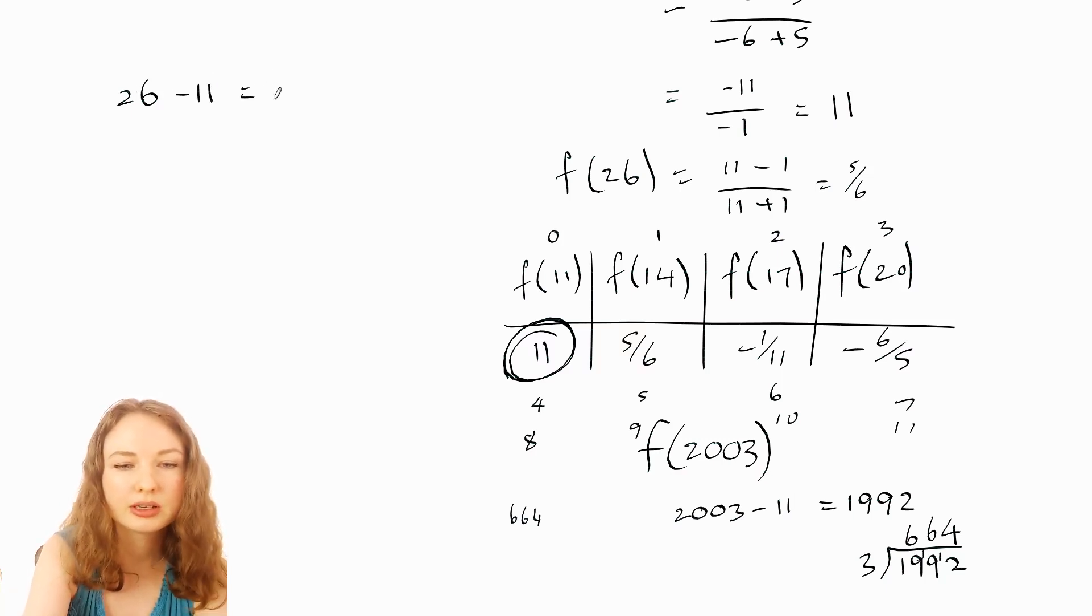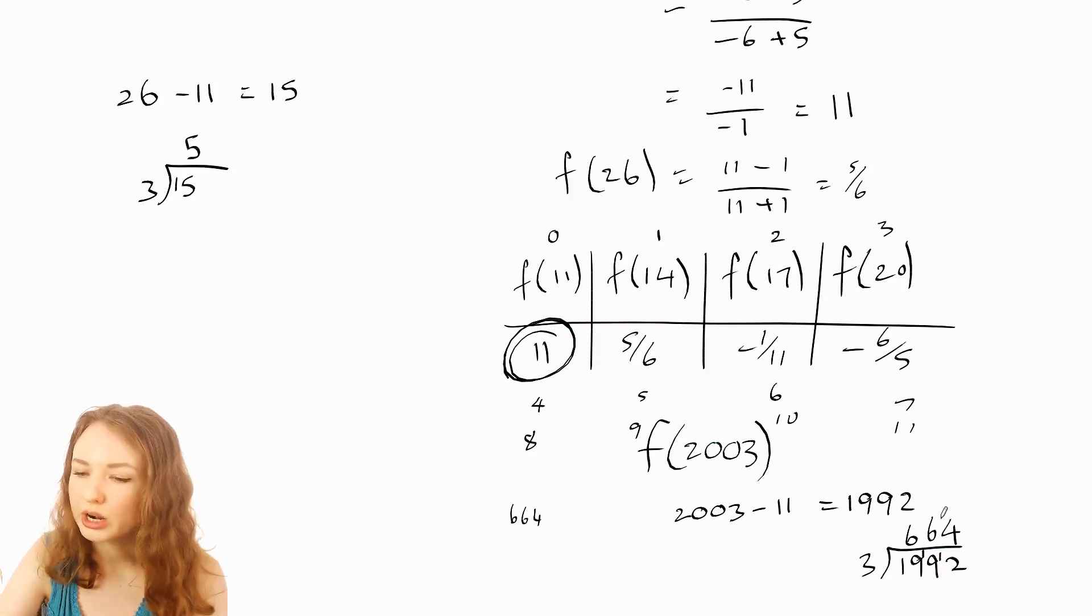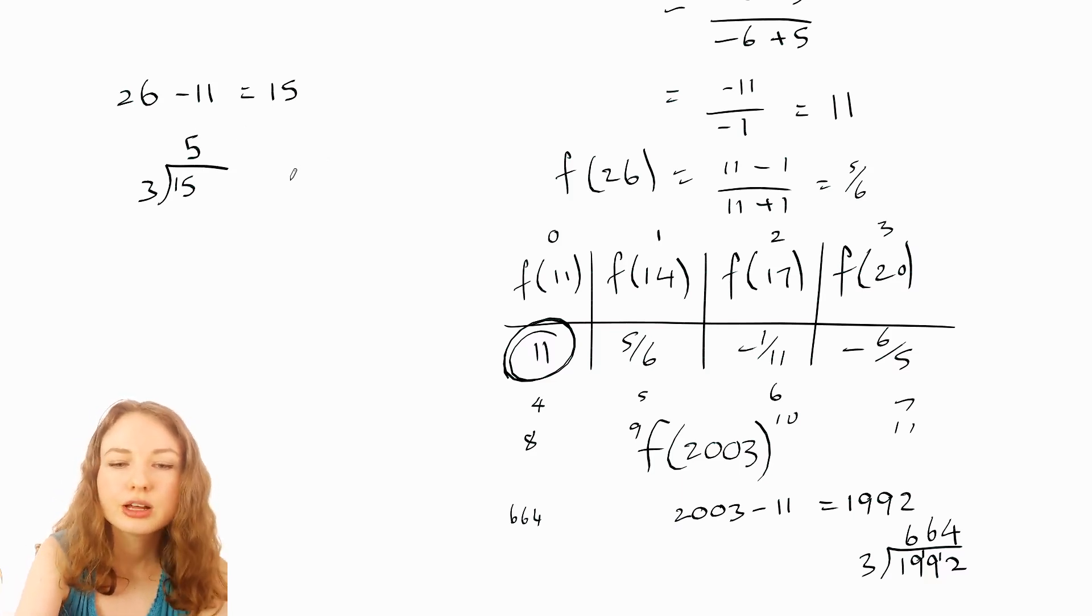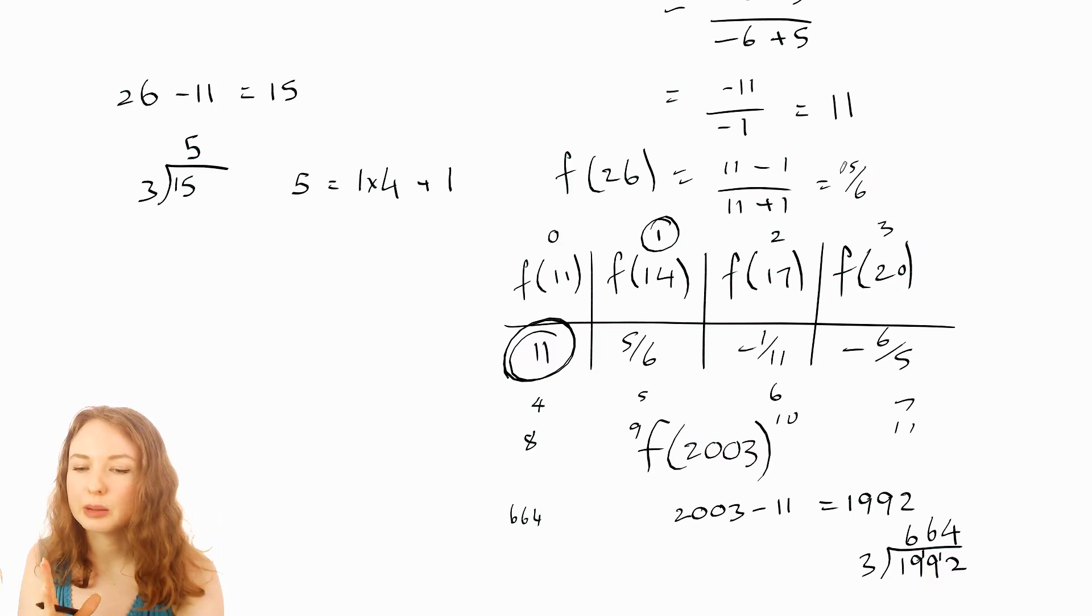So first thing I did was 2003 minus 11, so I'll do 26 minus 11. That makes 15. And then we did that divided by 3. So 15 divided by 3 is 5. And then what I did with that number was I worked out was it a multiple of 4 or does it have some remainder? So with this 5, that's 1 four with a remainder of 1. So that would put it in that column, which is correct. So I can see that that process is correct. I'm not off by 1, so I'm pretty confident that 11 is the answer from that.